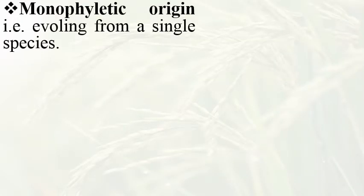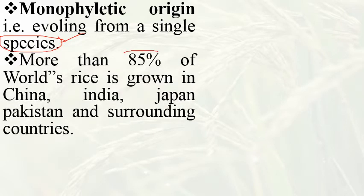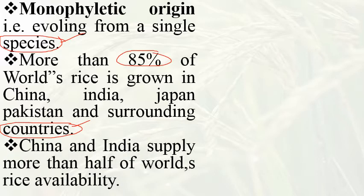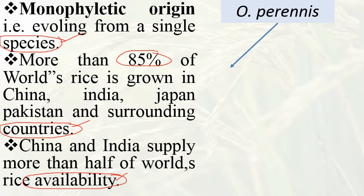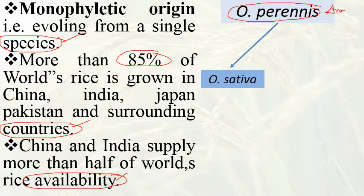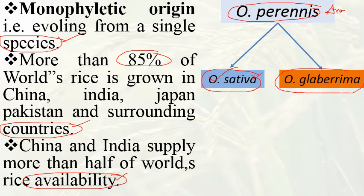The monophyletic origin means evolving from a single species. More than 85 percent of the world's rice is grown in China, India, Japan, Pakistan, and surrounding countries. China and India supply more than half of the world's rice availability. Under the monophyletic view, the single common ancestor is Oryza perennis, an annual species, which gave rise to both Oryza sativa and Oryza glaberrima. So there are two theories: polyphyletic origin from several species, and monophyletic origin from the single ancestor Oryza perennis.